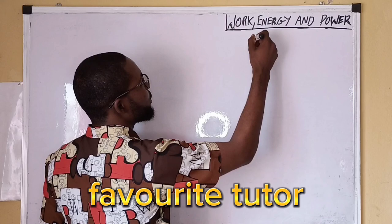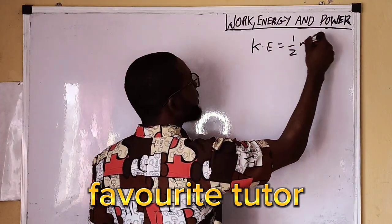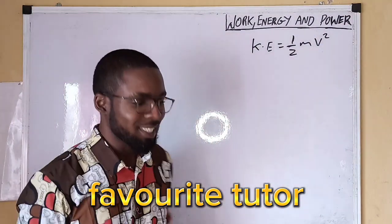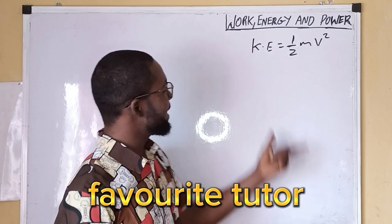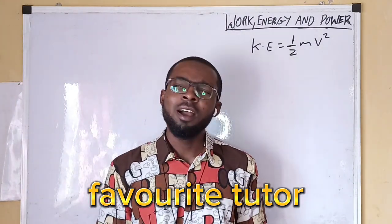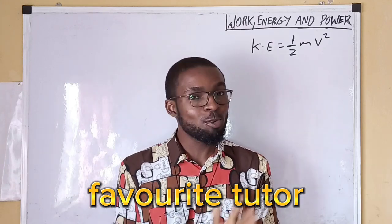1 over 2 mv squared? That is 1 over 2 mv squared. Why do we say that the equation for the kinetic energy is 1 over 2 mv squared? Many of us don't actually know this, but then let's look at it this way.